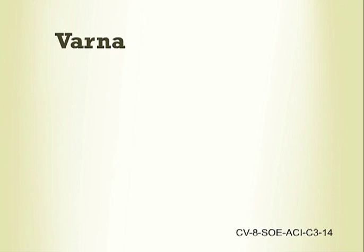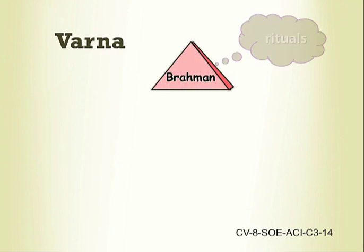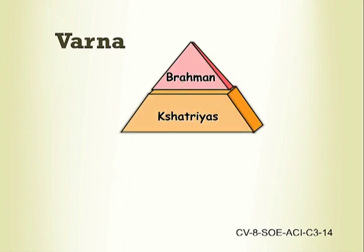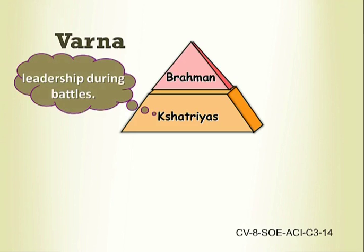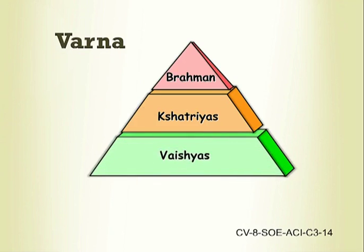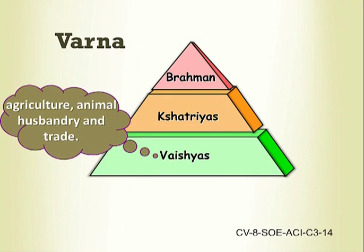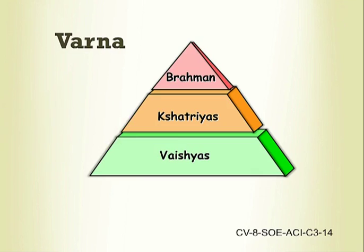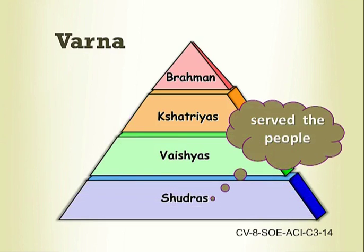The social system in the Vedic age was called Varna. There were four Varnas. The society in the Vedic age was a hierarchical one; people were divided according to their profession. They are: Brahman, Kshatriyas, Vaishyas, and Sudras. Brahmans engaged themselves in rituals. Kshatriyas assumed leadership during battles. Vaishyas engaged themselves in agriculture, animal husbandry, and trade. The fourth Varna, Sudras, served the people of other Varnas.